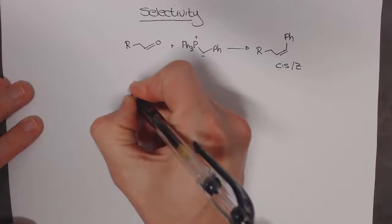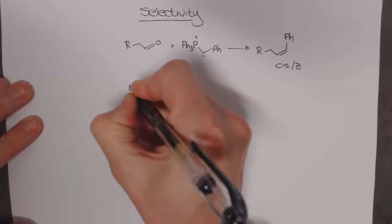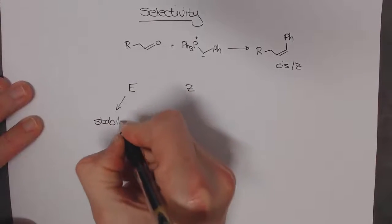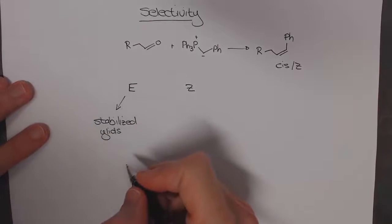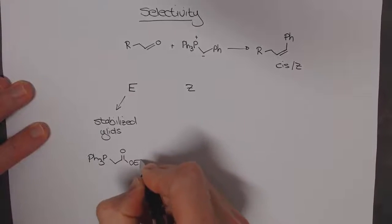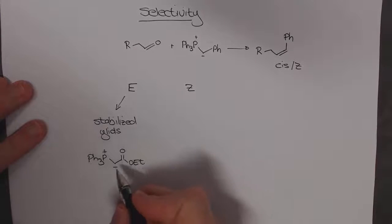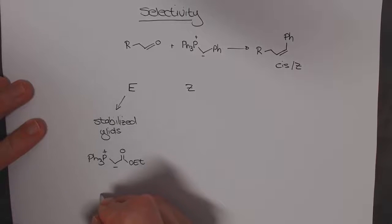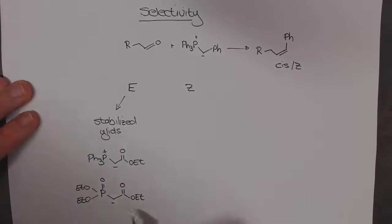Simply put, without going into too much detail, if you have two different types of alkenes that can form, E alkenes tend to be formed by stabilized ylids. In other words, ylids that have some ability for the negative charge to be delocalized. The classic one for the Wittig reaction is this stabilized ylid. But there are other versions, and the one that's important is the Horner-Wadsworth-Emmons reaction with a phosphonate ester, which is also a classic example of a stabilized Wittig reagent.